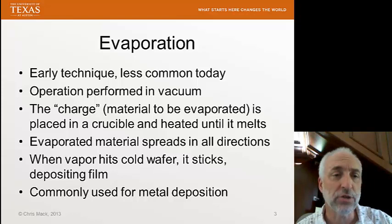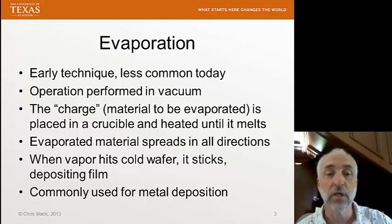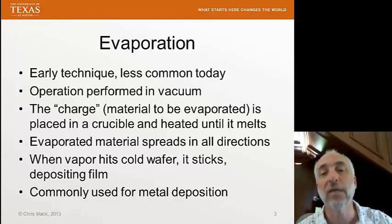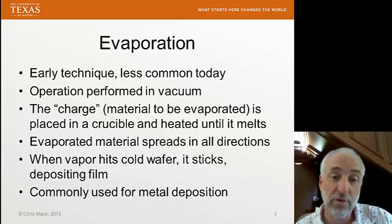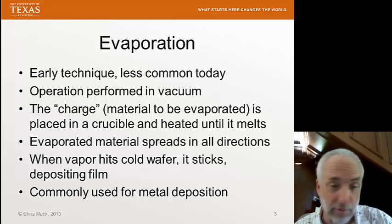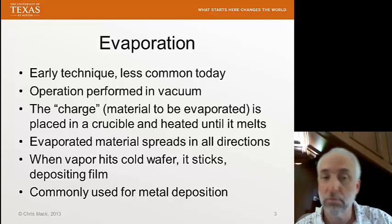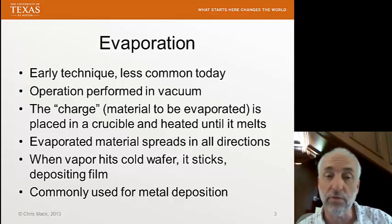With evaporation, the operation is performed in a vacuum. We have a charge — the material we want to deposit — which we put in a crucible and heat until it melts. Because it's in a vacuum and melted, it will evaporate and spread out in all directions. When this vapor hits a cold wafer, it sticks and deposits a film. It's commonly used for metal deposition, but it can also be used for certain dielectrics as well.